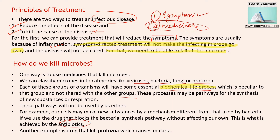Another example is drugs that kill protozoa which cause malaria. All antibiotic drugs or drugs controlling or killing microbes work on the same principle — they target the biochemical pathway so that microbes can no longer multiply or survive in our body. In turn, their count becomes lower and our immune system is able to handle the infection.